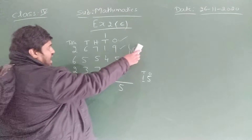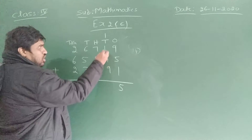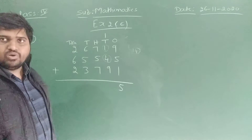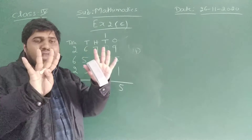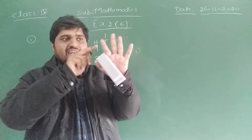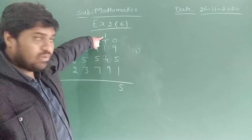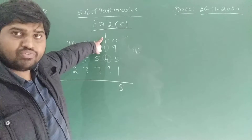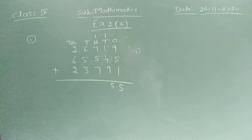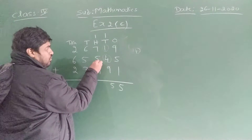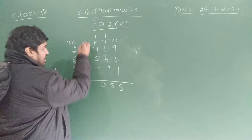Now next, add the tens. First add one plus four — that is five. Five plus nine: five in your mind, nine in your hand, count nine fingers: six, seven, eight, nine, ten, eleven, twelve, thirteen, fourteen. Answer is fourteen, and we also have one carry. Fourteen plus one is fifteen. Write five, carry one. Next, seven plus five is twelve. Twelve plus seven is nineteen. Nineteen plus one is twenty. Write zero, carry two.